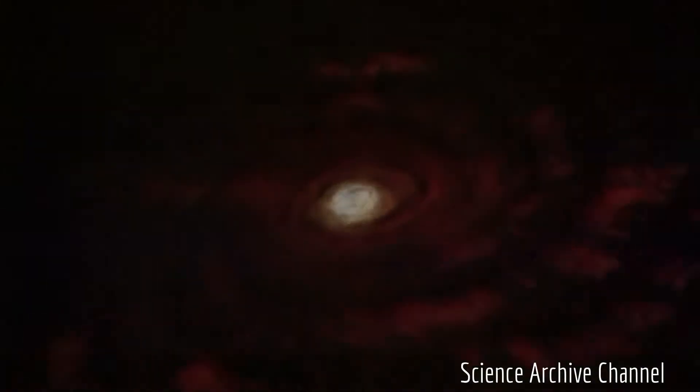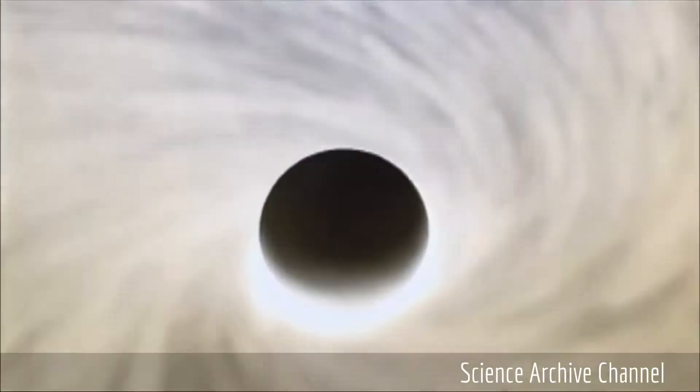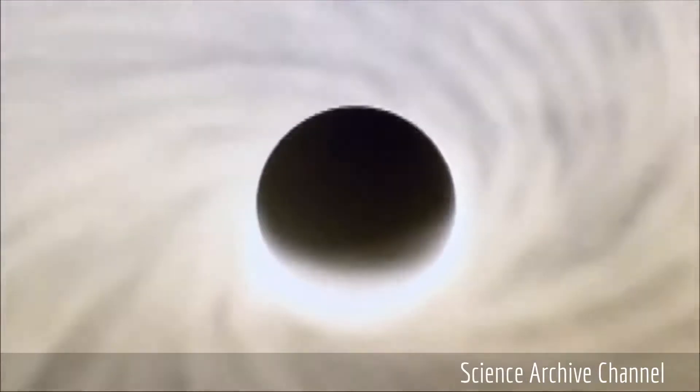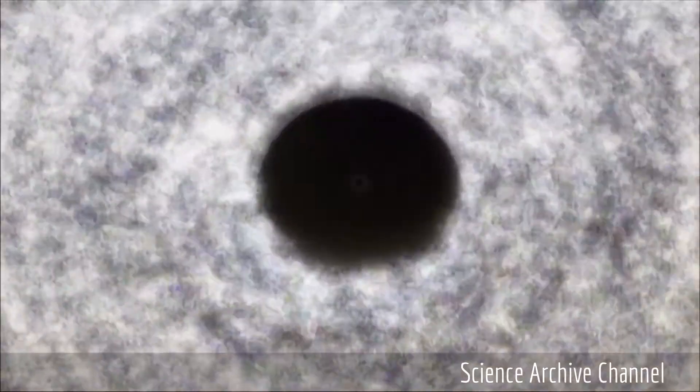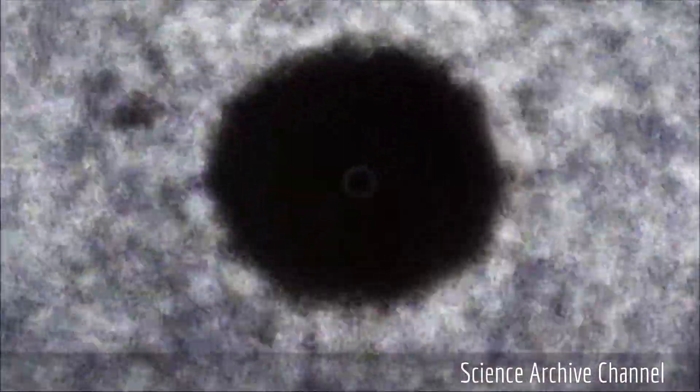Scientists think that magnetars are only a few thousand years old and will become dim after 10,000 years. We're just now starting to understand the life cycle of magnetars. We think that they're very young, but how young is still uncertain.